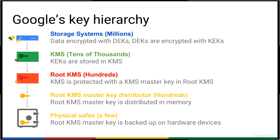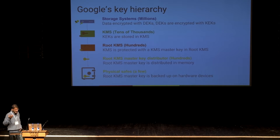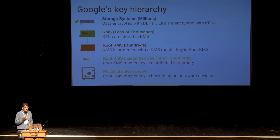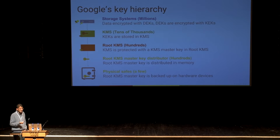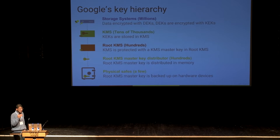Going back to the top: storage systems, when encrypting data, chunk it up, generate a random data encryption key, encrypt the data, write the ciphertext to disk, then take the data encryption key and call out to the KMS, which wraps the key and returns the wrapped key back to the storage system. The wrapping is performed using the key encrypting key, which never leaves the KMS. It turtles all the way down to a single key — the root of trust — stored in a few physical safes if all of Google were to restart, but otherwise held only in RAM on a few hundred machines around the world.